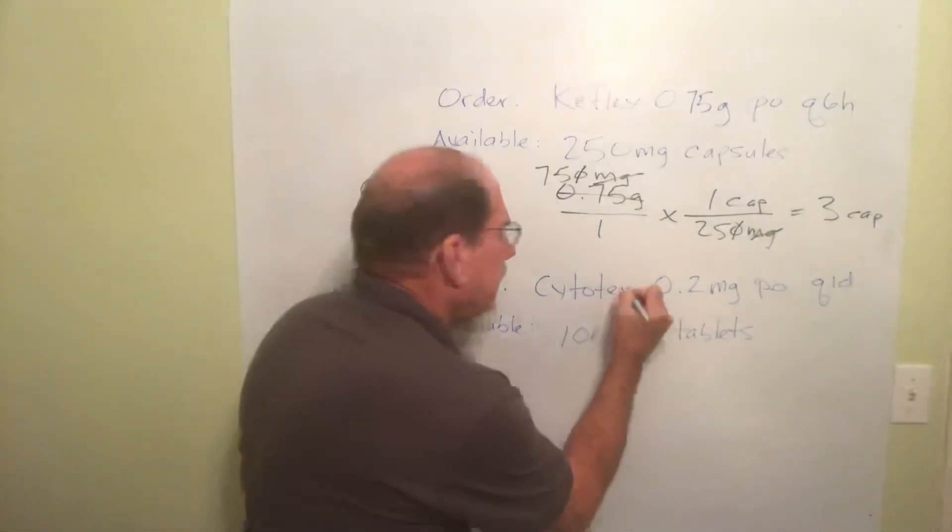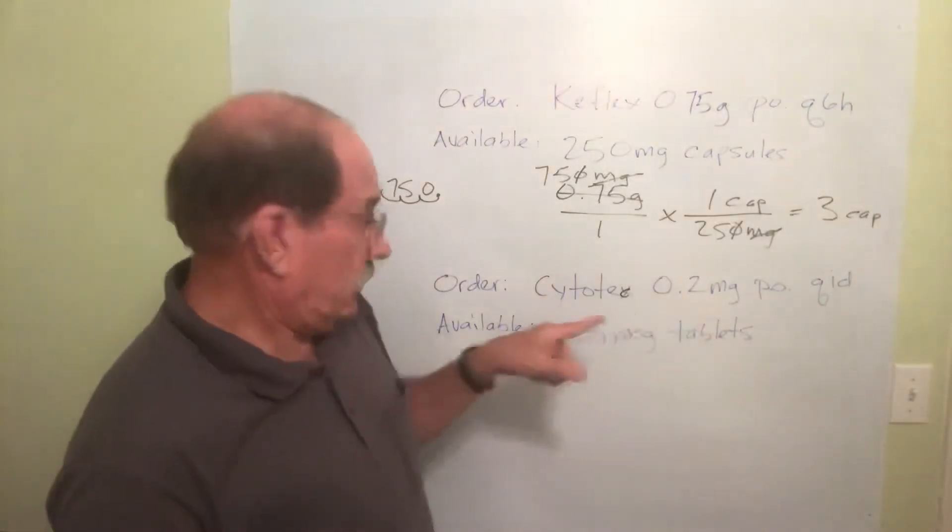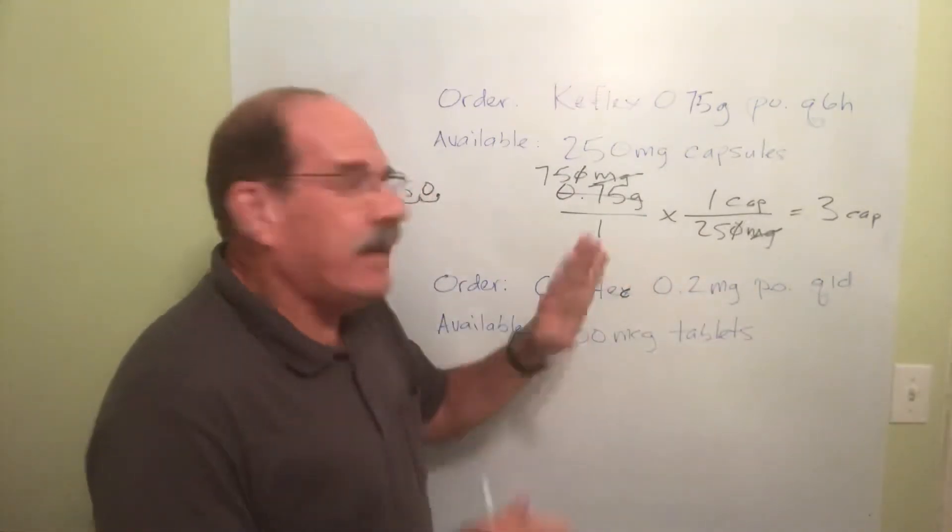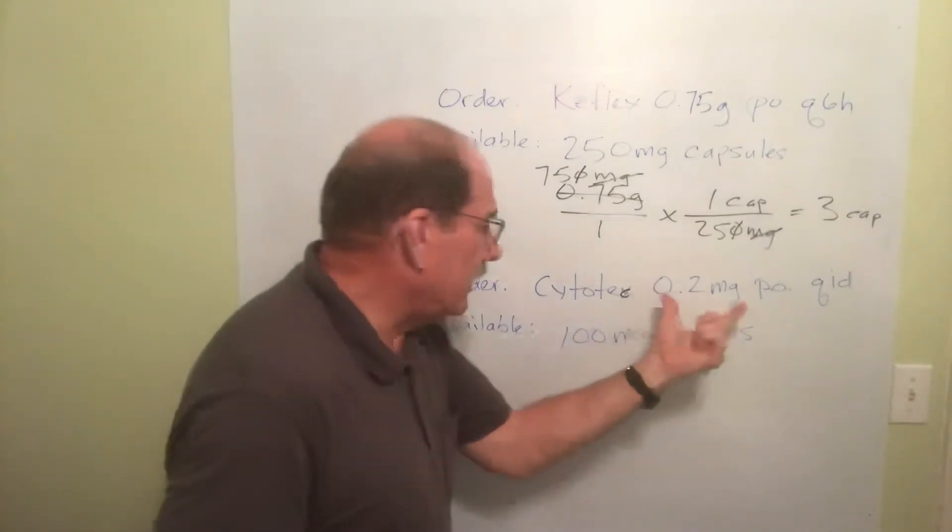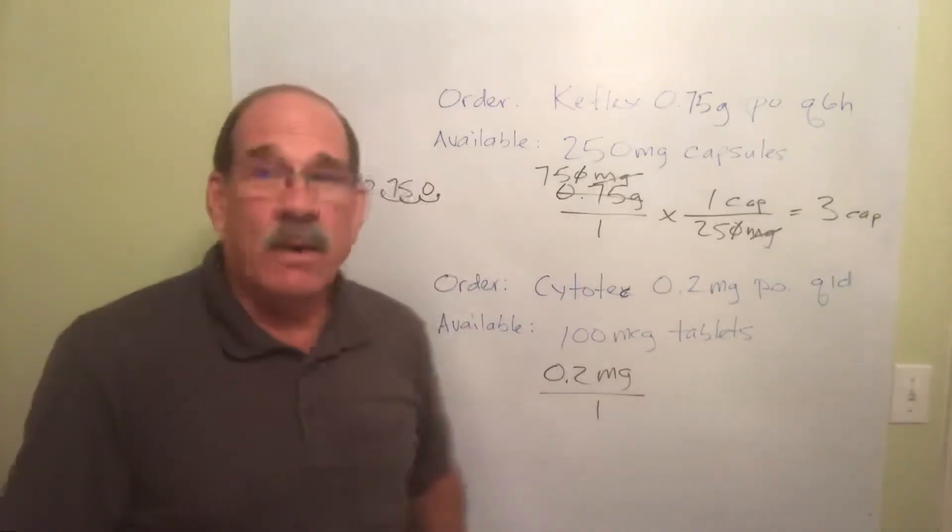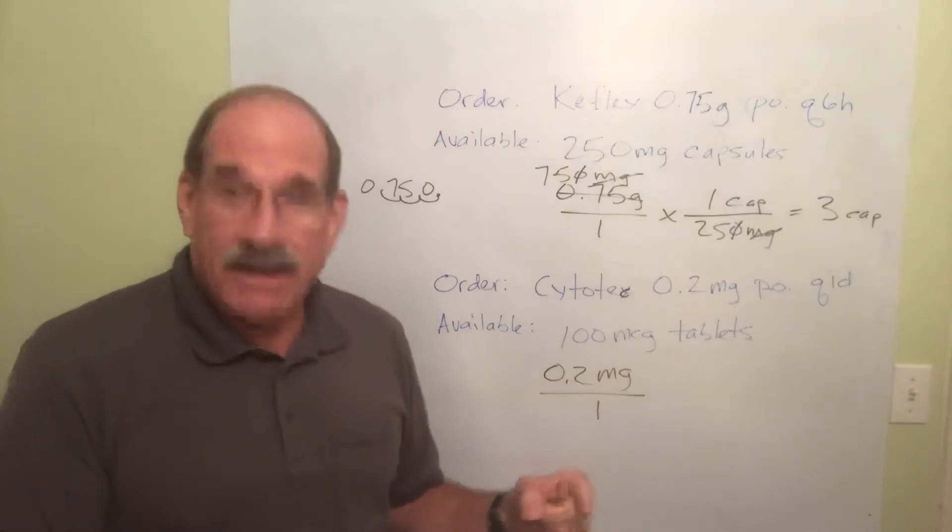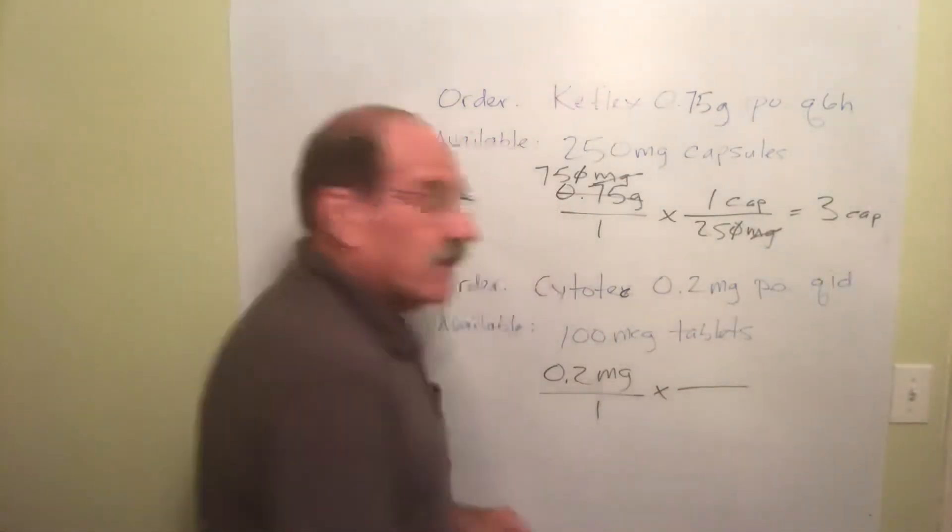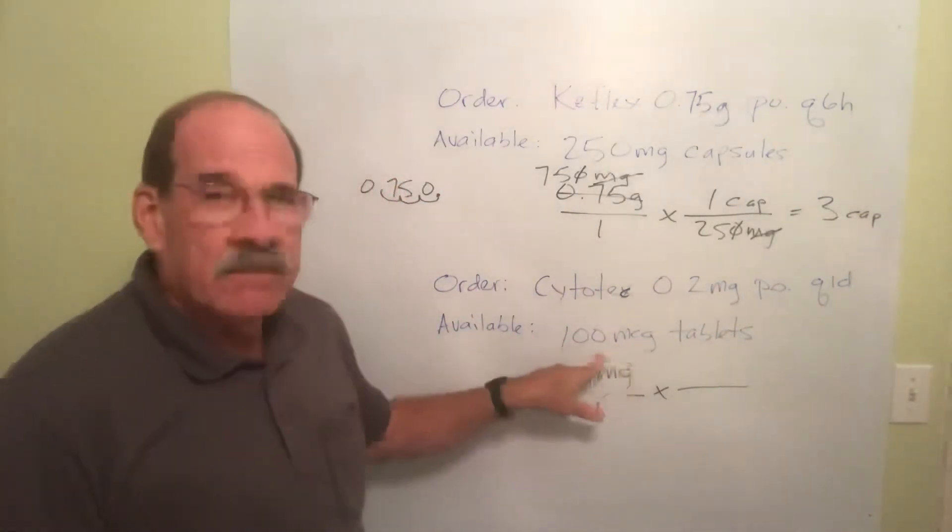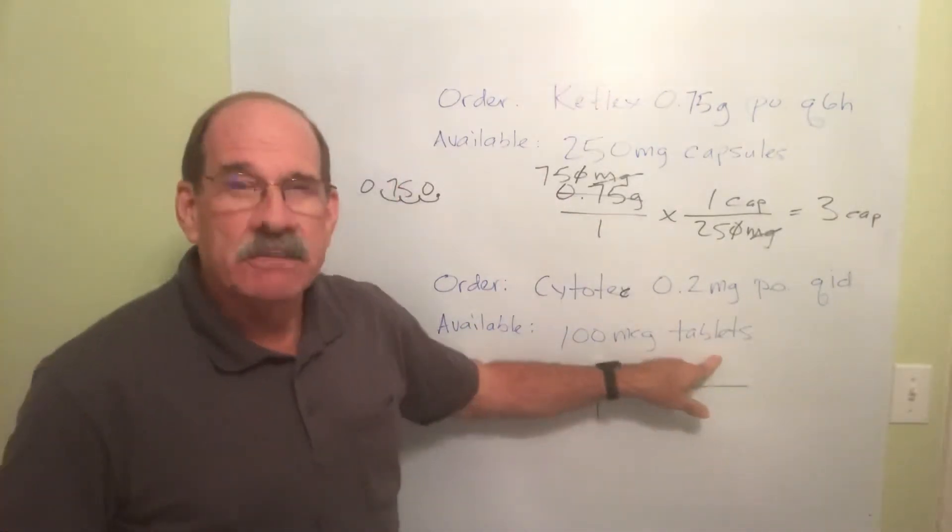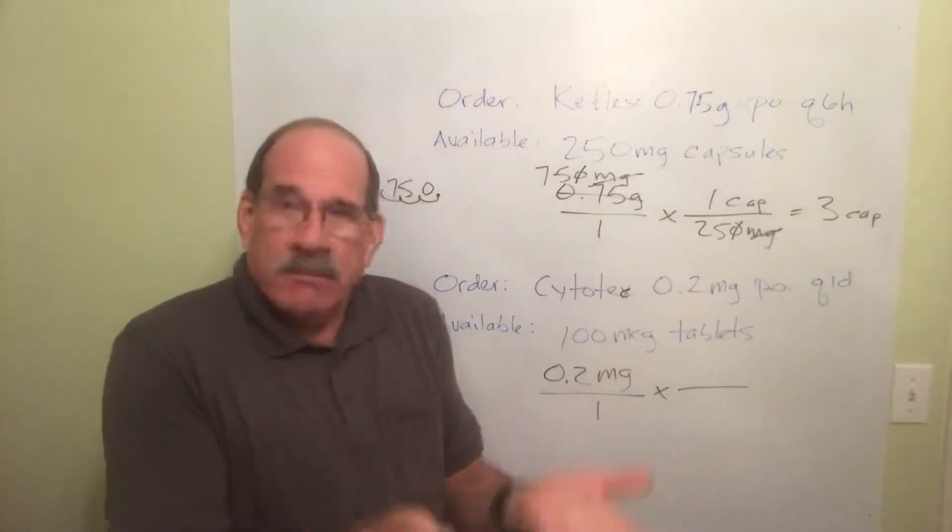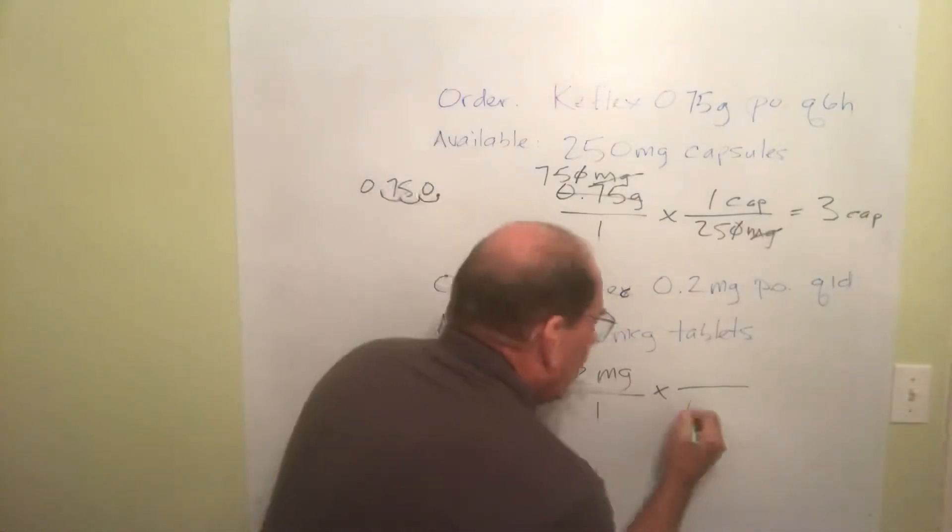Okay, I'm going to give some Cytotec. I'm going to give 0.2 milligrams by mouth. What does QID mean? Four times a day. Okay, so the main thing is, for doing the math, all I have to know is I'm going to give 0.2 milligrams. 0.2 milligrams, put it over one. You got the pattern down by now. Yeah, I now multiply by another fraction, which of course is my dosage strength. I've got some, what does it say, some 100 microgram tablets. Every tablet has 100 micrograms.